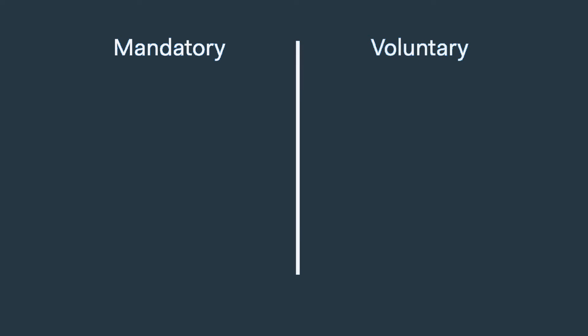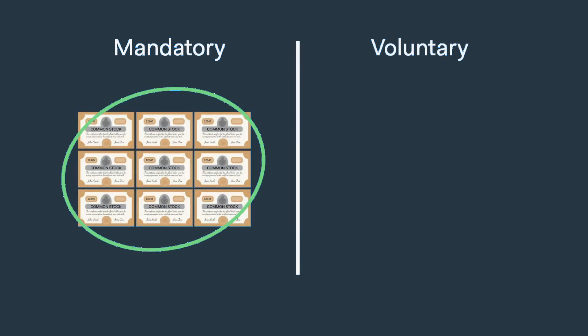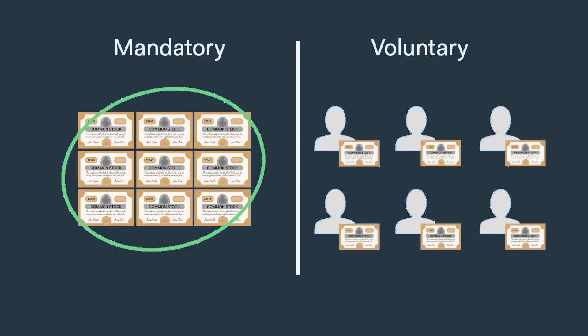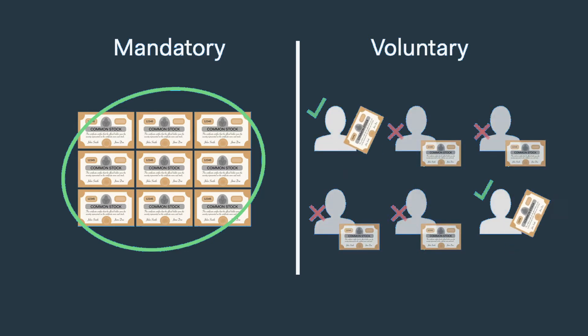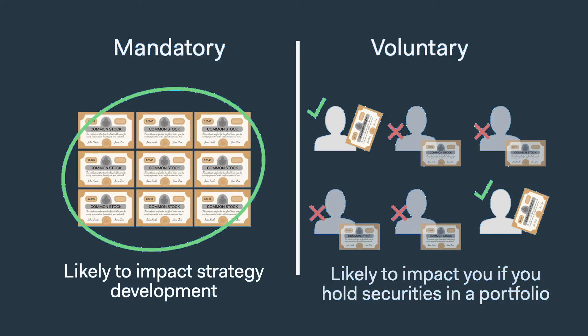Corporate actions are either mandatory or voluntary. Mandatory actions will impact all securities issued by that company, whereas a voluntary action will only impact shares that are held by shareholders who choose to be part of the action. Mandatory events will primarily be the subject of this video series, since those are more likely to impact you as you're developing a strategy. However, we'll also cover voluntary actions, since they're likely to impact you if you hold securities in a portfolio.